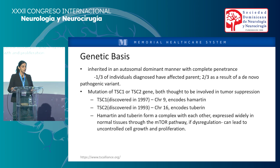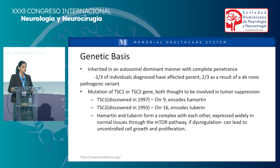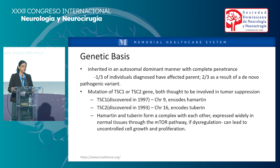Regarding genetic basis, TSC is inherited in an autosomal dominant manner with complete penetrance. About a third of individuals diagnosed will have an affected parent, and two-thirds result from a de novo pathogenic variant. The mutation is thought to be in the TSC1 or TSC2 gene, both thought to be involved in tumor suppression, encoding hemerton and tuberin respectively. Hemerton and tuberin form a complex which is expressed widely in normal tissue through the mTOR pathway.